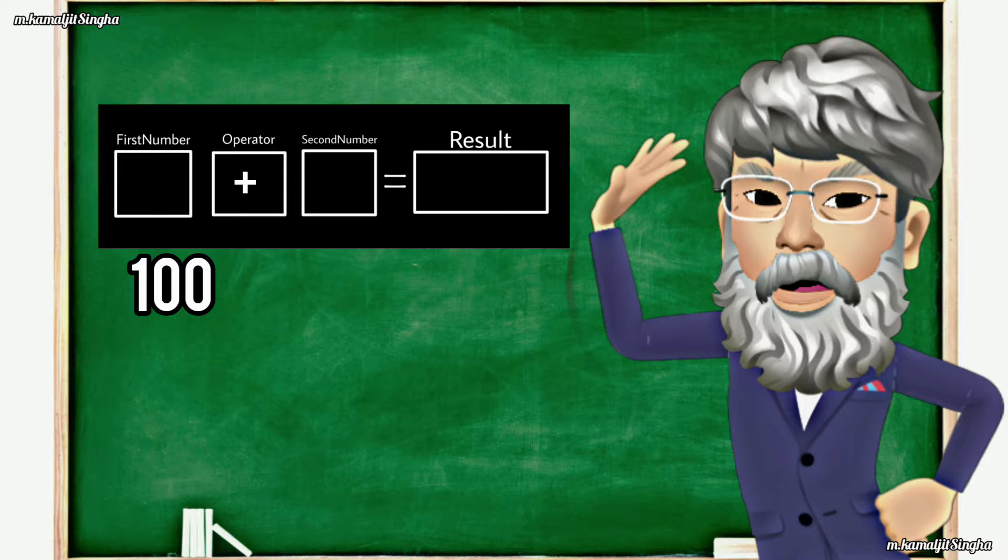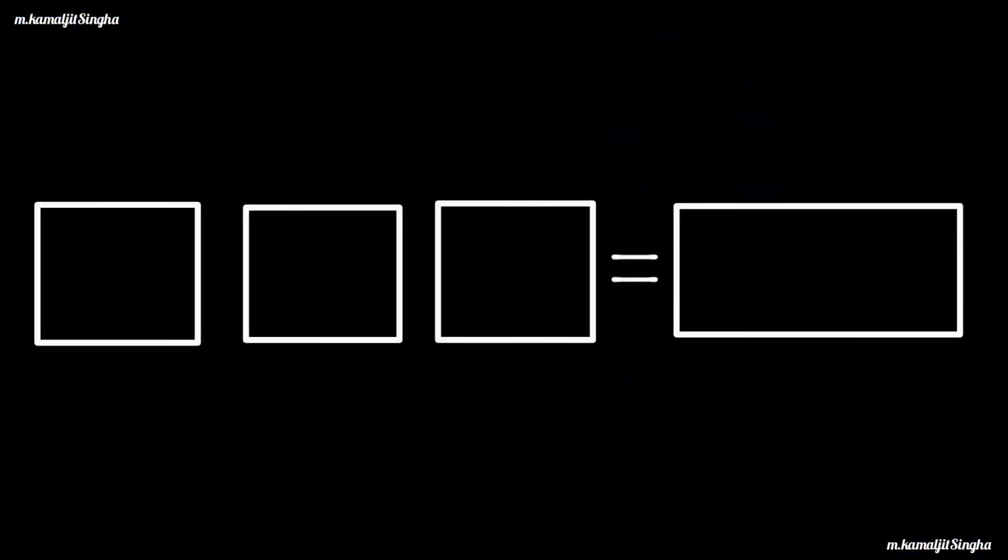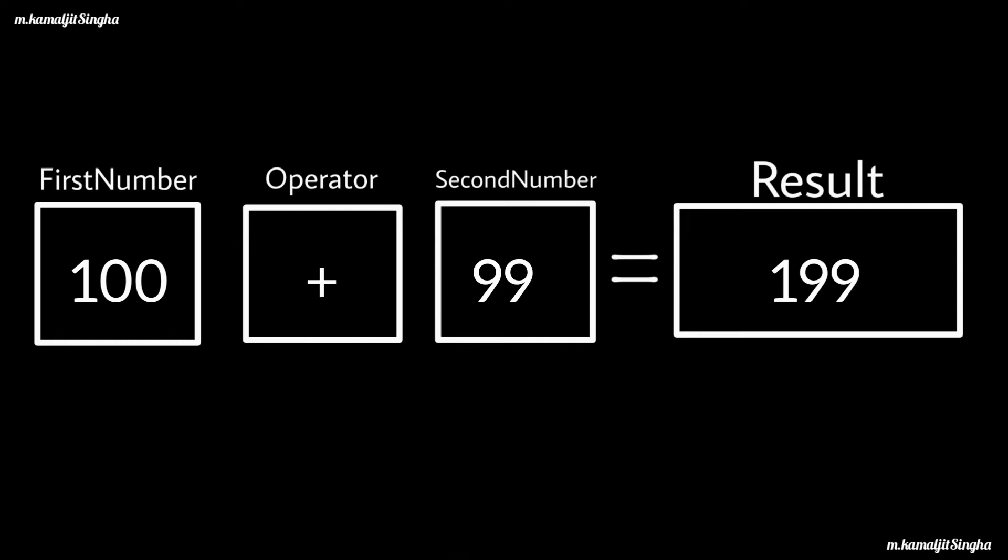That means first number operating with second number equals the result. Let's assume that inside a calculator there are four blocks of variables. When we press the keys, it stores the values here and displays the result on the screen.